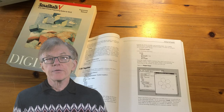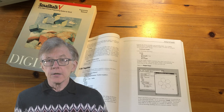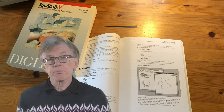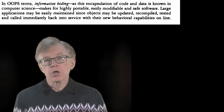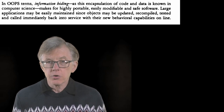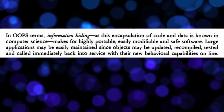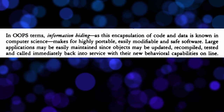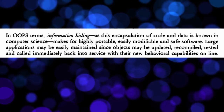As in previous lessons in this series, I'm using the Smalltalk V tutorial as the core text. If you haven't got a copy, use the link below to get one. In the last lesson we came to this passage on page 14 of the tutorial: "Information hiding, as this encapsulation of code and data is known in computer science, makes for highly portable, easily modifiable, and safe software." Encapsulation is the object-oriented version of modularity.